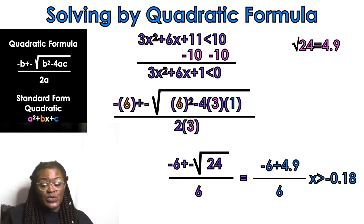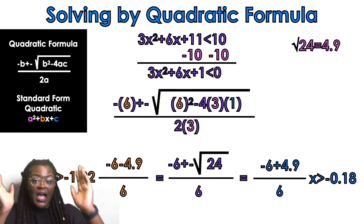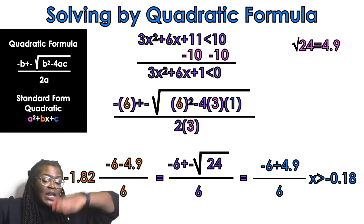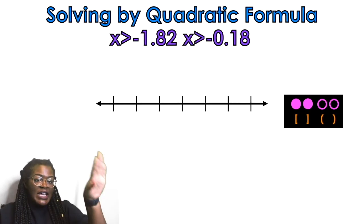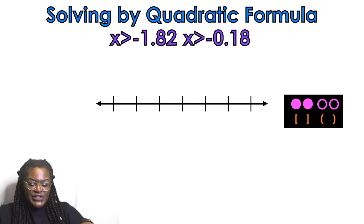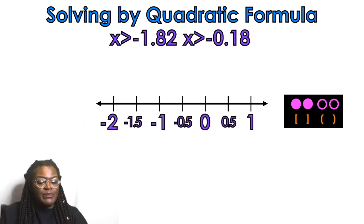Negative 6 plus 4.9 over 6 gives x greater than or equal to approximately negative 0.18. Negative 6 minus 4.9 over 6 gives x greater than or equal to approximately negative 1.82. We take the orange and blue answers to the number line, smaller value first: negative 1.82, then negative 0.18.